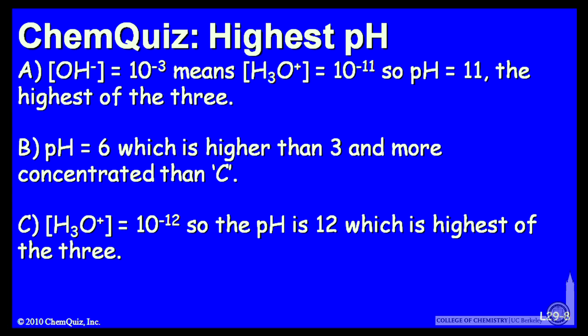H3O plus is 10 to the minus 12, so the pH is 12, which is the highest of the 3. Think about those three explanations and make a selection.